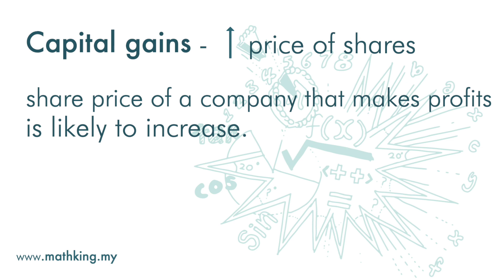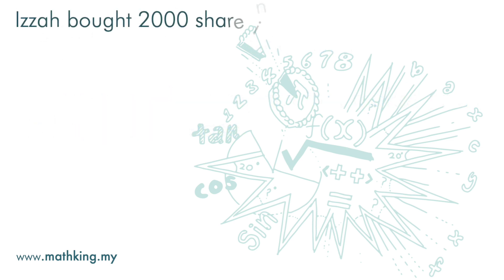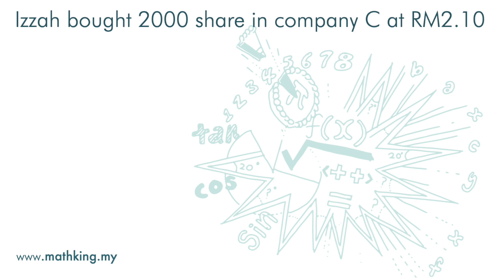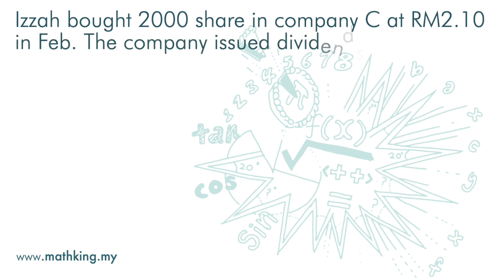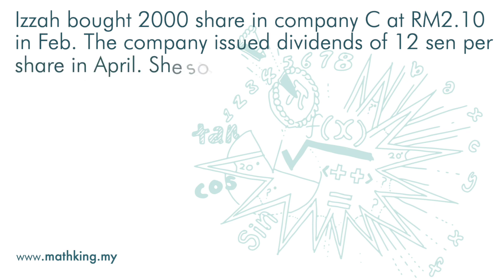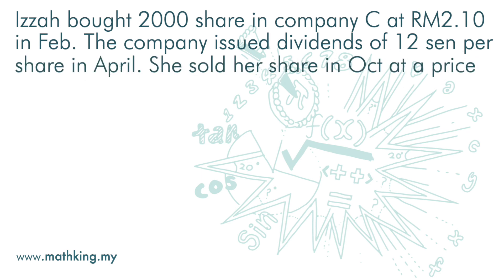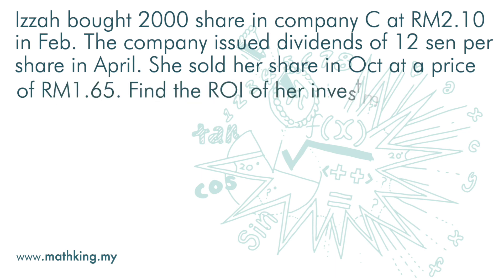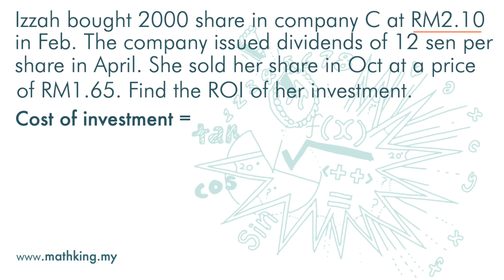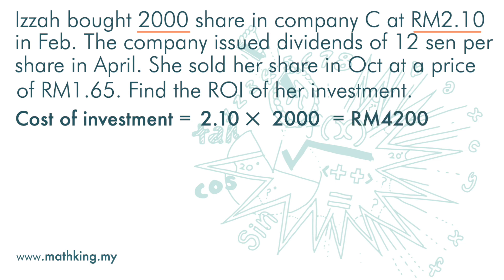Now let's look at this question. Isa bought 2,000 shares in Company C at 2 ringgit 10 cents in February. The company issued a dividend of 12 cents per share in April. She sold her shares in October at a price of 1 ringgit 65 cents. Find the ROI of her investment. The cost of investment is 2 ringgit 10 cents times 2,000 shares, which is 4,200 ringgit.